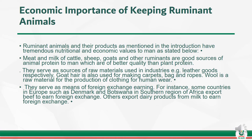Goat hair is also used for making carpets, bark, and robes. Wool is a raw material for the production of clothing for human wear. They serve as means of foreign exchange earning. For instance, some countries in Europe, such as Denmark, and Botswana in Southern Africa, export beef to earn foreign exchange. Others export dairy products from milk to earn foreign exchange.